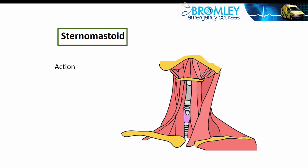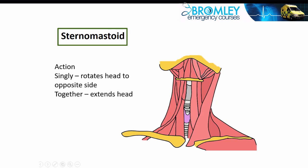So the sternomastoid muscle — there's one on each side of course — and each muscle turns the head towards the opposite side. When both of them work together they flex the neck, they bend the neck forward, but because they attach to the back of the head to the mastoid behind the pivot point, they actually extend the head so that the head looks upwards.